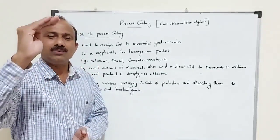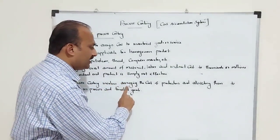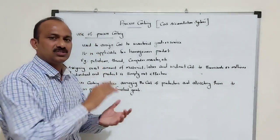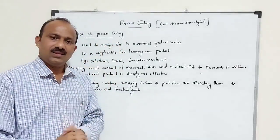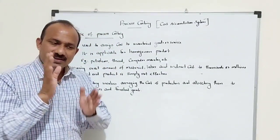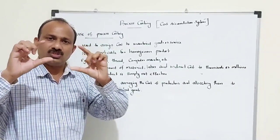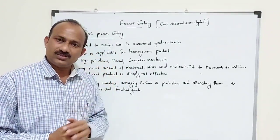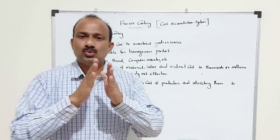Therefore, process costing involves averaging the cost of production. We say process costing involves averaging the cost of production and allocating the cost to work in process and finished goods. You want to know exactly how much the cost of the inventory is at each stage — each process — what the cost associated with work in progress is, and finally you reach finished goods.